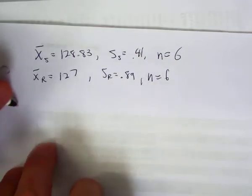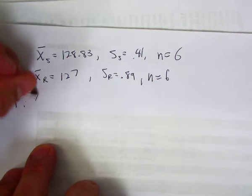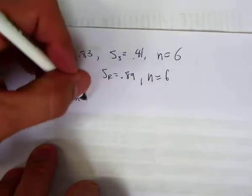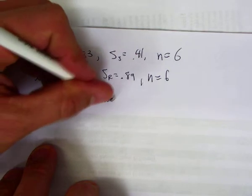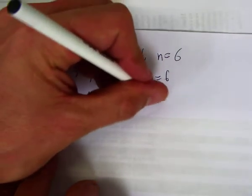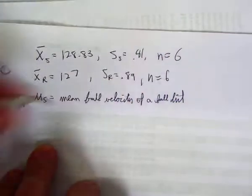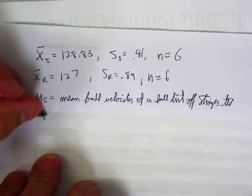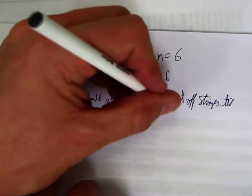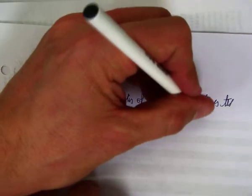So the parameter mu of s is the mean ball velocity of a ball hit off a stinger t. And then mu of r is going to be the mean ball velocity of a ball hit off a regular t.